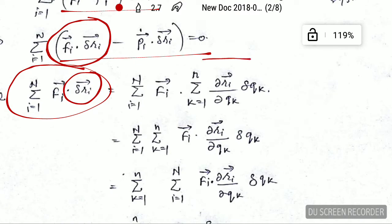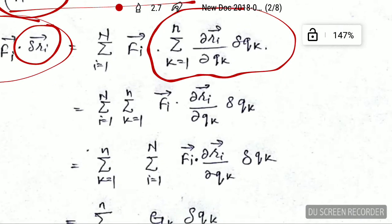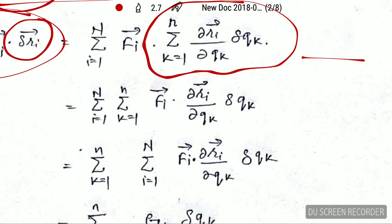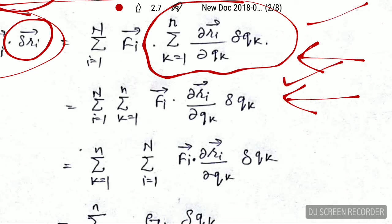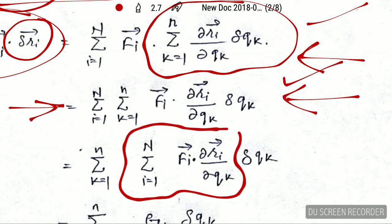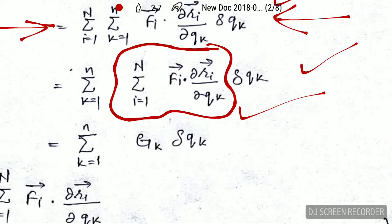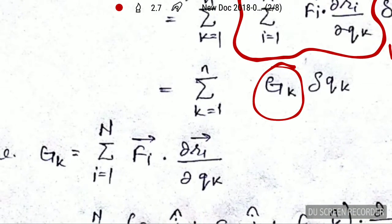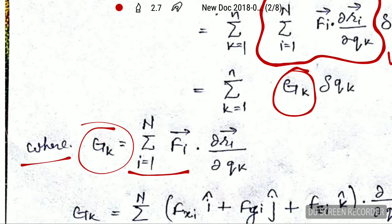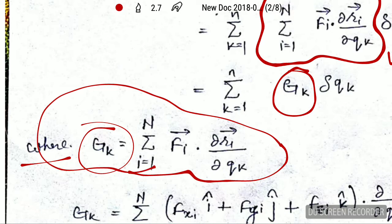I have rearranged the equation a little bit, and you can see we can easily bring it to this form. From this equation we can isolate this particular part and write it separately. This part has been given a special name: G_k. We set G_k equal to this quantity, which has a special meaning.